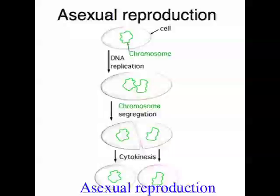There's binary fission, and that's basically where a single-celled organism splits into two, and then you've got two organisms. Bacteria do this - their one single circular chromosome replicates, and then they split down the middle, and then there's two bacteria, and they're both exactly the same.